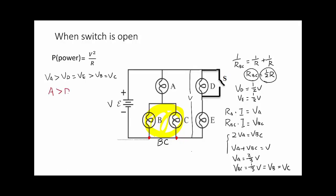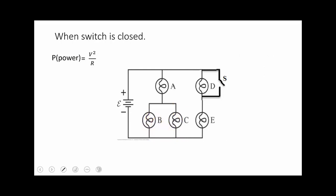If the switch is closed, you should know that there is no current going through D. So we can see VD is 0. BC are still in parallel. We regard them as one with small r, which is half R, as we calculated before.